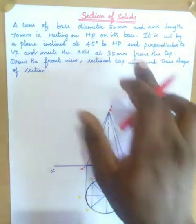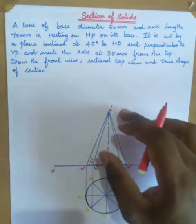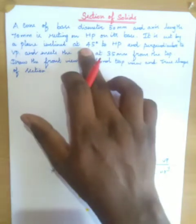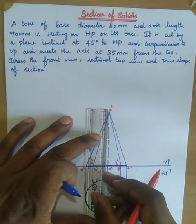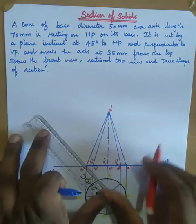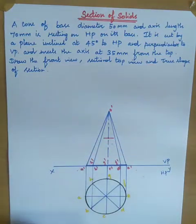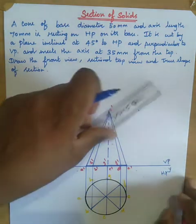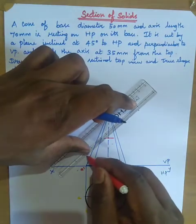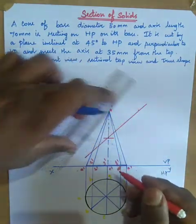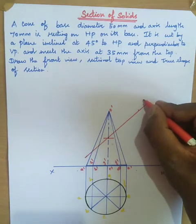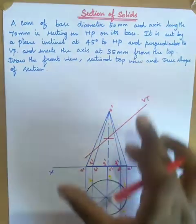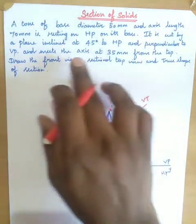It is cut by a plane inclined at 45 degrees to HP and perpendicular to VP, and meets the axis at 35 mm from the top. Place your scale at the uppermost point O and take a 35 mm distance, then draw one reference line in order to cut at the inclination angle of 45 degrees. Place your protractor at that reference line point, take 45 degrees, and cut the front view section.